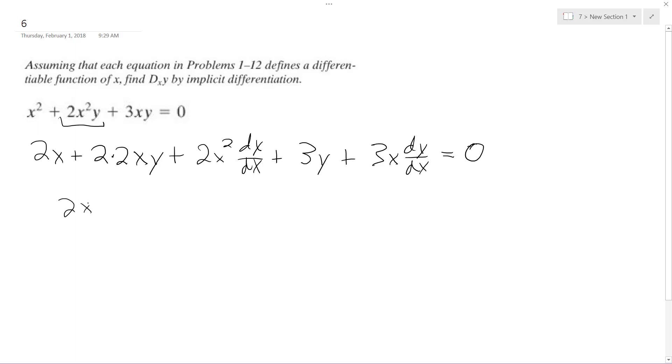so I have 2x² dy/dx plus 3x dy/dx equals negative 2x minus 4xy minus... oops, minus 3y.